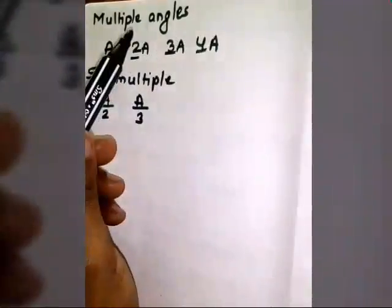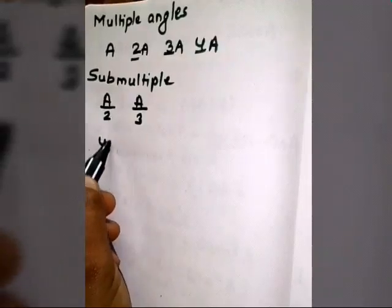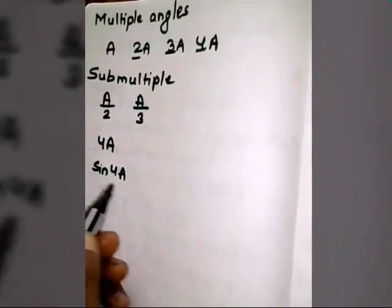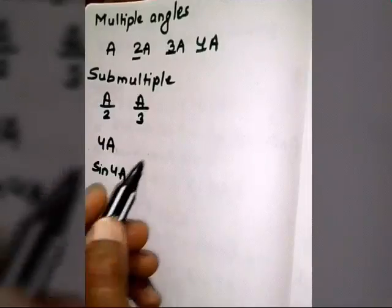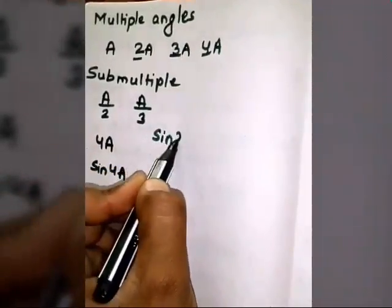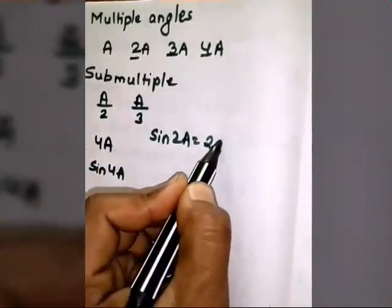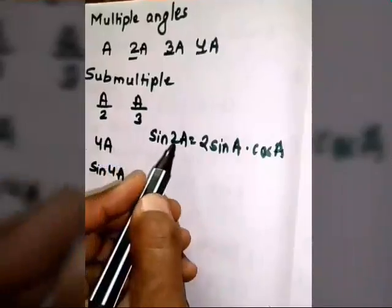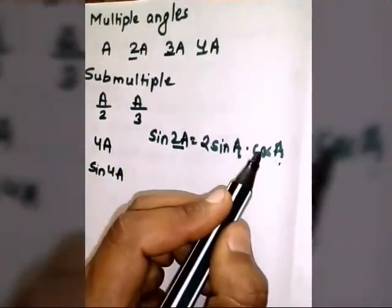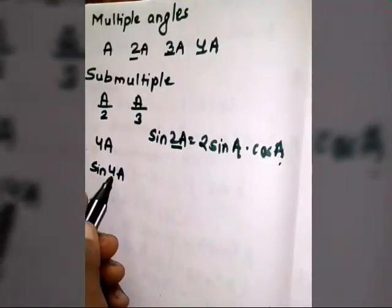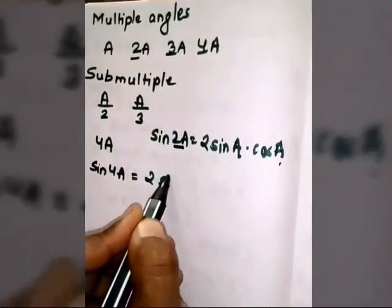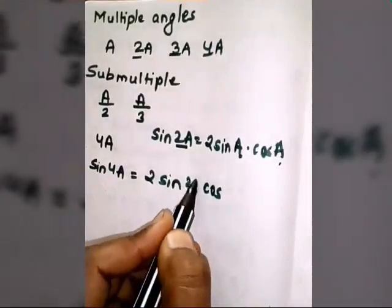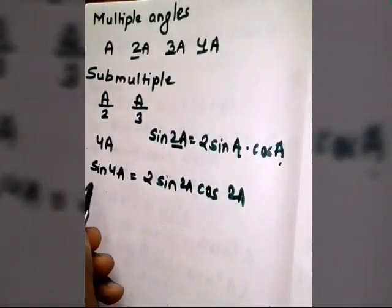Now let's talk about larger angles. For example, what is the formula of sin 4A? To find this, we compare with a formula we already know. The formula of sin 2A is 2 sin A cos A. The pattern is: when the angle is 2A, the terms inside are A and A — which is half. So for sin 4A, the formula will be 2 sin 2A cos 2A, since half of 4A is 2A.